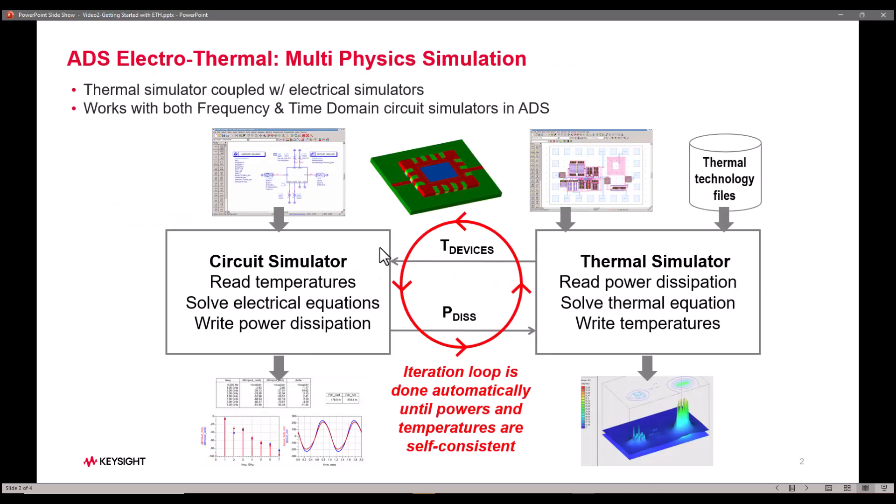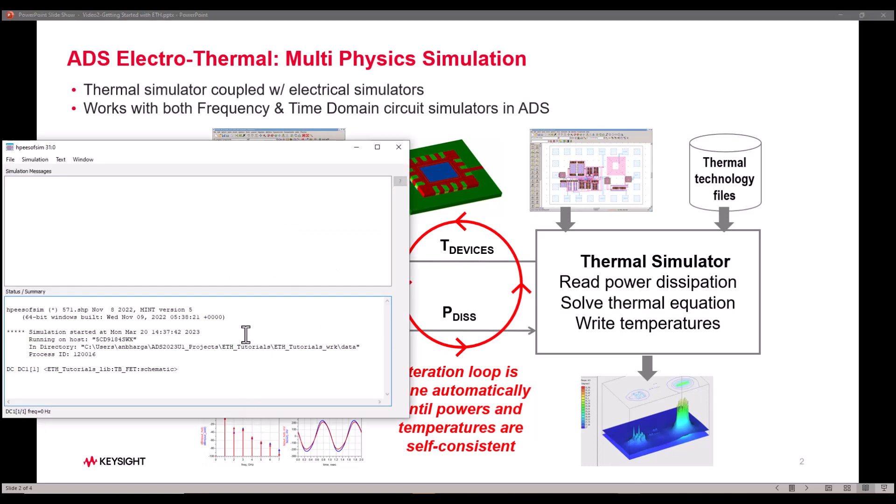Now if I need to perform circuit simulation it will go ahead and run that loop which we just talked about in our slide. It will run circuit simulation calculate the power dissipation pass that information to thermal simulator and then the temperature computed will be passed back to circuit. And this loop will continue and that is what you will be able to see in the status window.